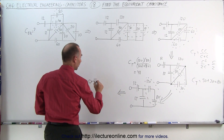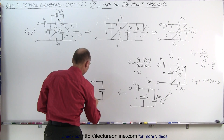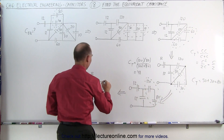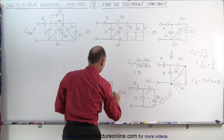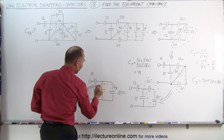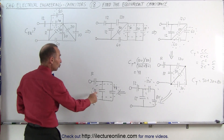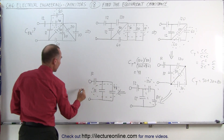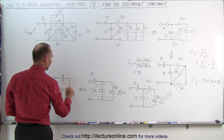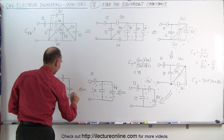We still have the 12 microfarad capacitor. The 120 and the 80 combined now form a single 48 microfarad capacitor. Now we can look at these two — notice that these two are in parallel, which means we can simply add them together. 12 plus 48 equals 60, which means this circuit now becomes: we still have the 12 microfarad capacitor, and the 12 plus the 48 combined give us a 60 microfarad capacitor.